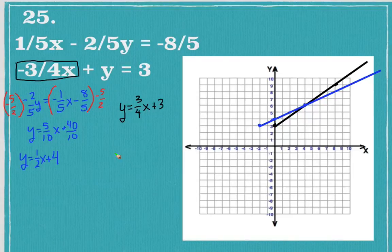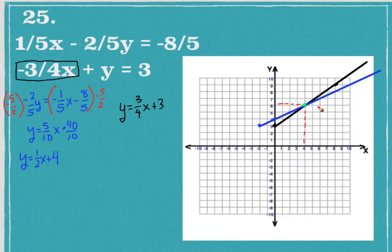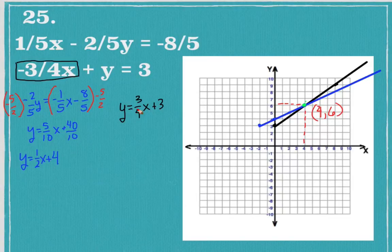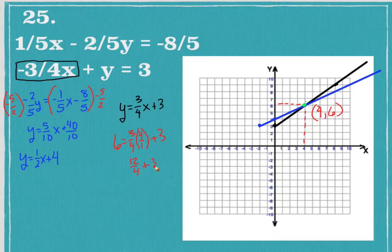I've graphed both lines — the blue line from the blue equation and the black line from the black equation. They appear to intersect at the point (4, 6). To check the black line: three-fourths times 4 plus 3 equals 12 over 4 plus 3, which is 3 plus 3 equals 6. Yes, that equals 6, so (4, 6) is a solution for the black line.